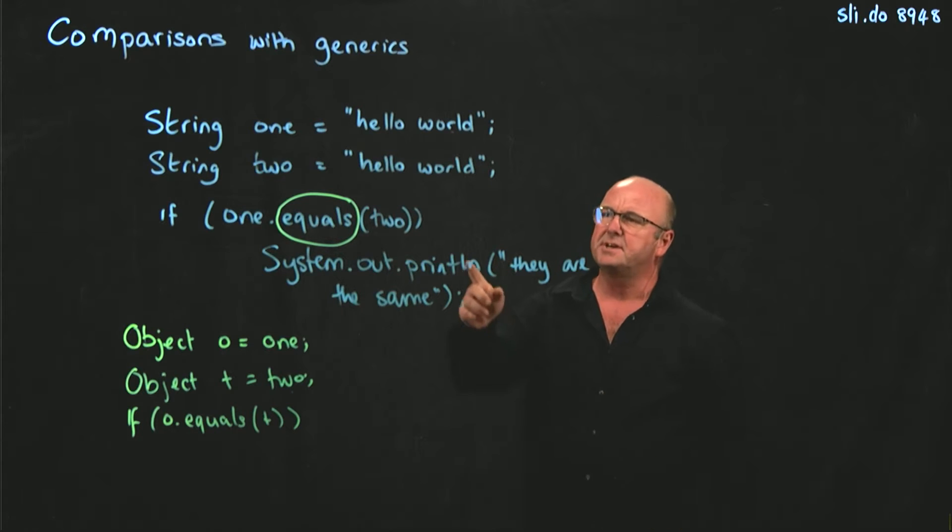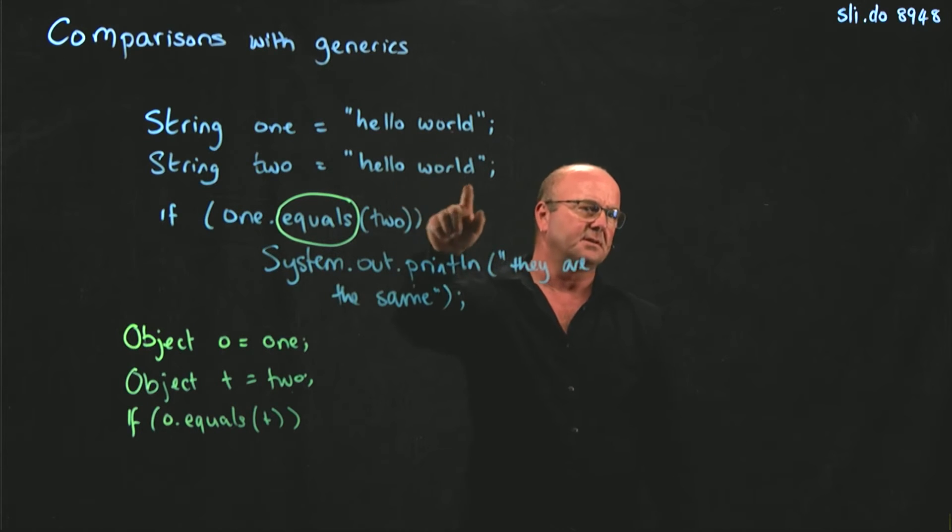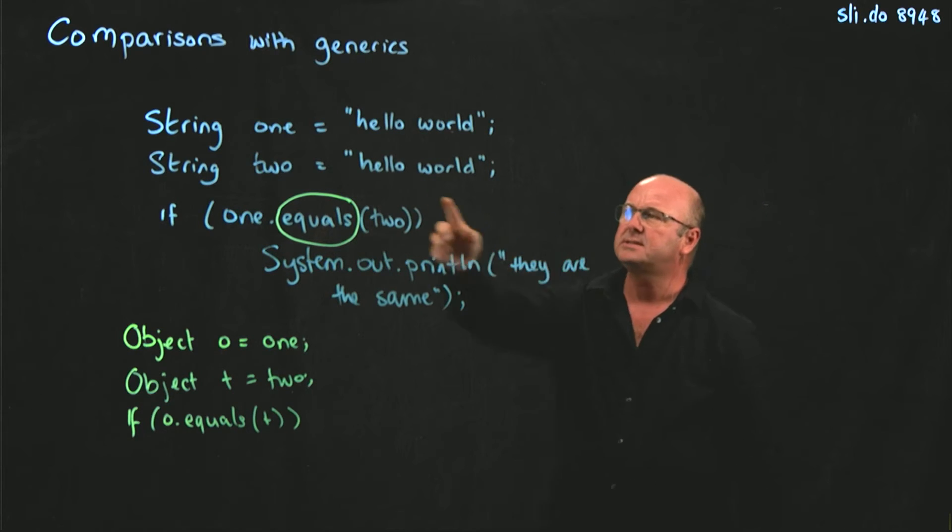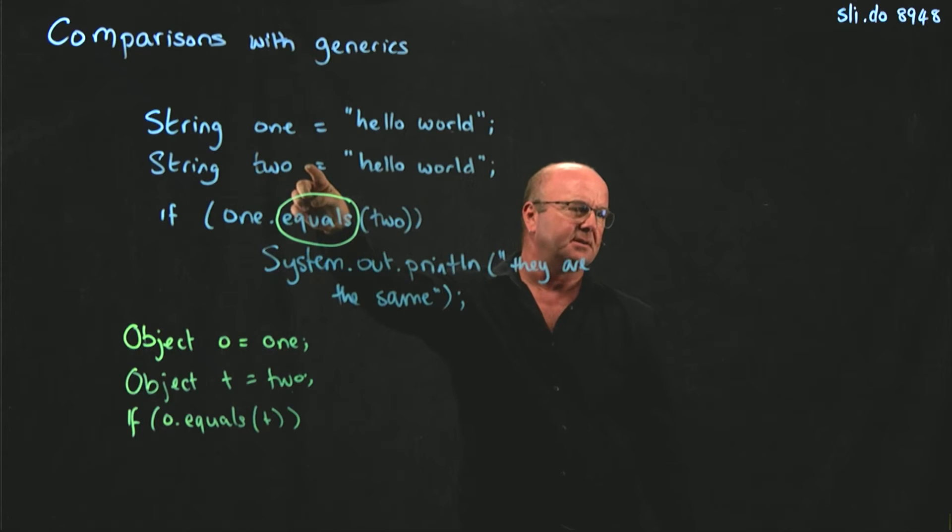How does string compare two objects? So these don't have the same memory address, right? But it would say this would be true, right?